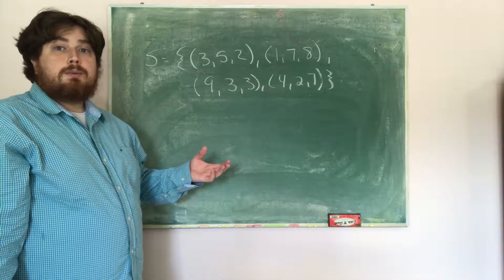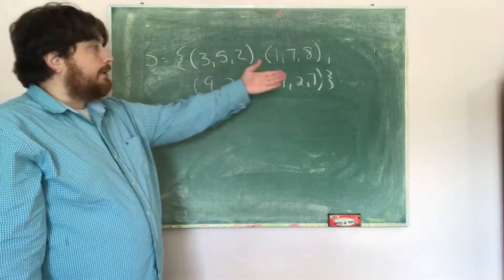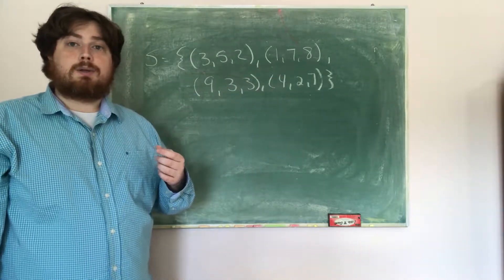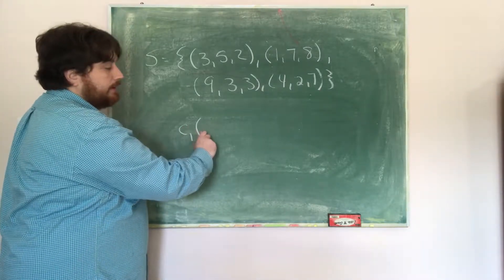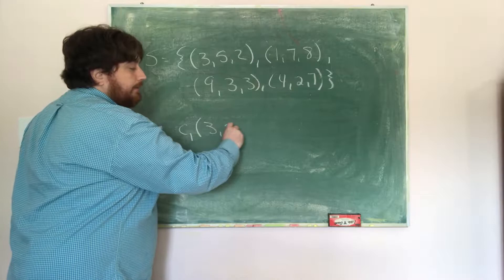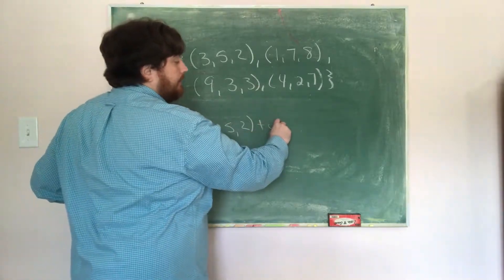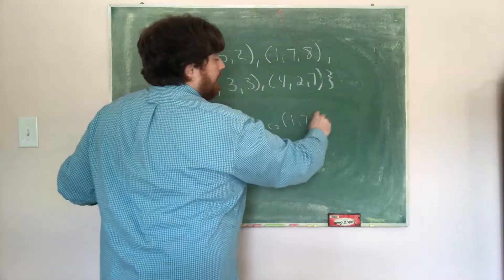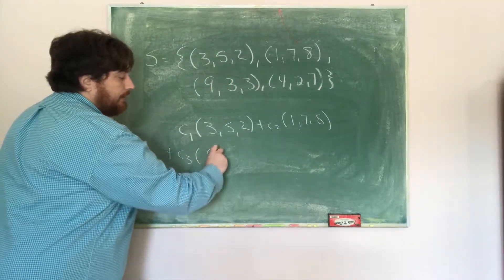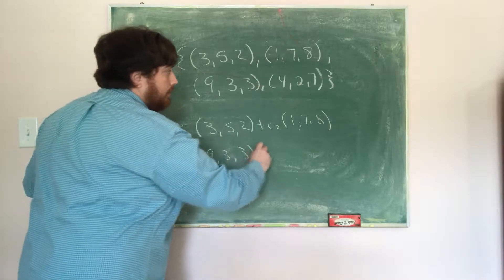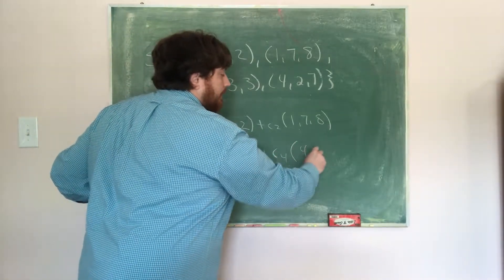In order to answer that question, we're going to be looking at linear combinations of these vectors and asking different questions. For our linear combinations, we're going to take C1 times (3, 5, 2), plus C2 times (1, 7, 8), plus C3 times (9, 3, 3), plus C4 times (4, 2, 7).